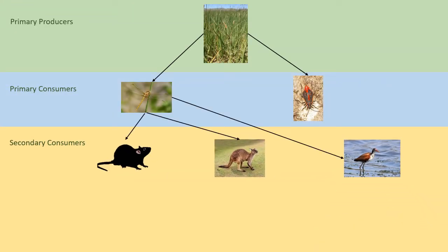The dragonfly is eaten by the rat and the kangaroo, while the bug is eaten by the kangaroo and the water bird. The energy flows up the food web, but not all to the same animals.